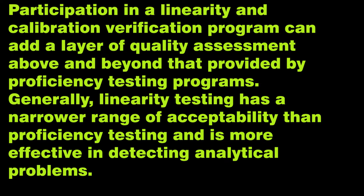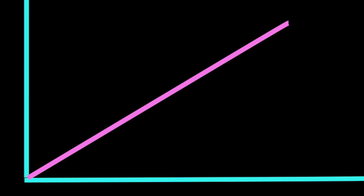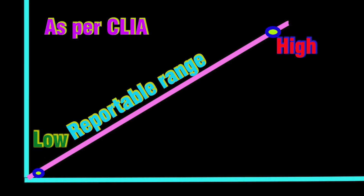What is the range we need to check? The reportable range, as per CLIA, is defined as the span of test results — low end to high end — that the laboratory can actually verify the results of a clinical test system for a given assay. The reportable range includes the sample dilution for high levels of analytes, for example HCG beta.